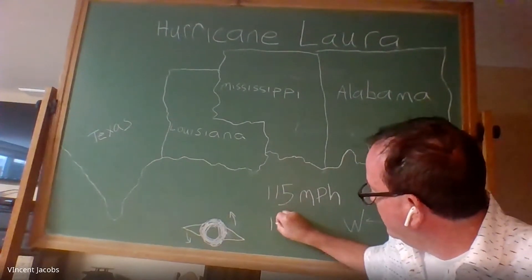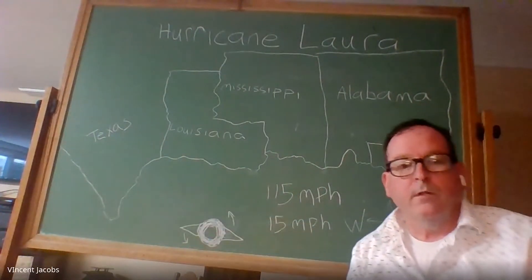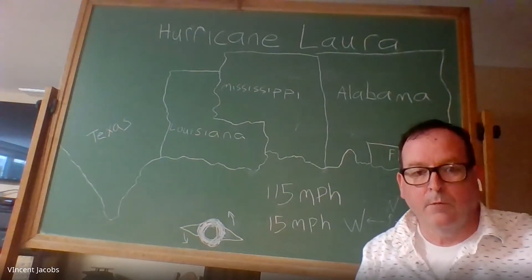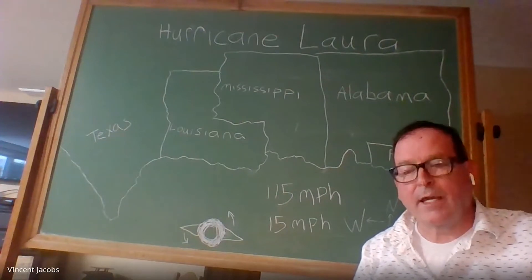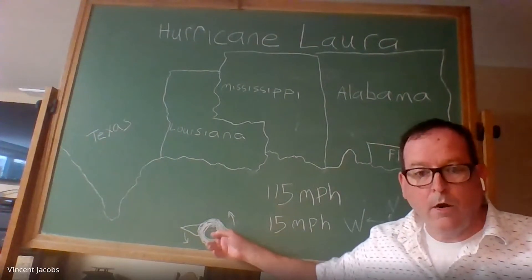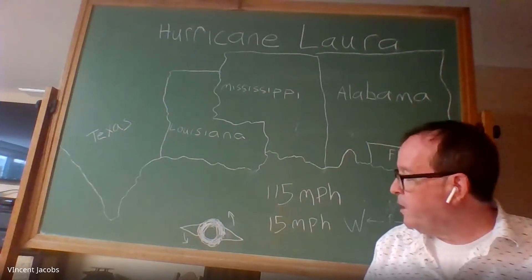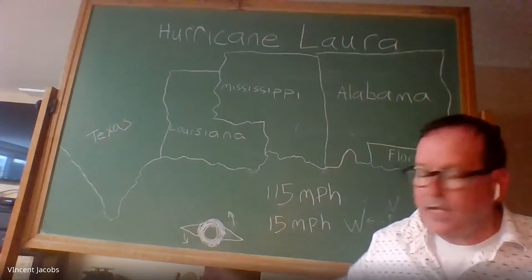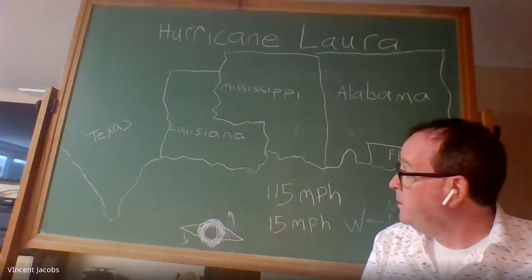The storm is moving at 15 miles per hour — that's how fast the storm itself is moving. Hurricanes don't move on their own; they don't have feet or legs. They are pushed by the atmosphere and by winds. That is how scientists can try to let people know where a hurricane may be going. They can never be 100 percent correct, but usually we can look at the weather patterns and winds and predict where a storm is going to go.